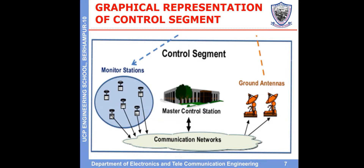The graphical representation of the control segment shows the control segment, monitor stations, ground antennas, and master control station connected via communication networks.